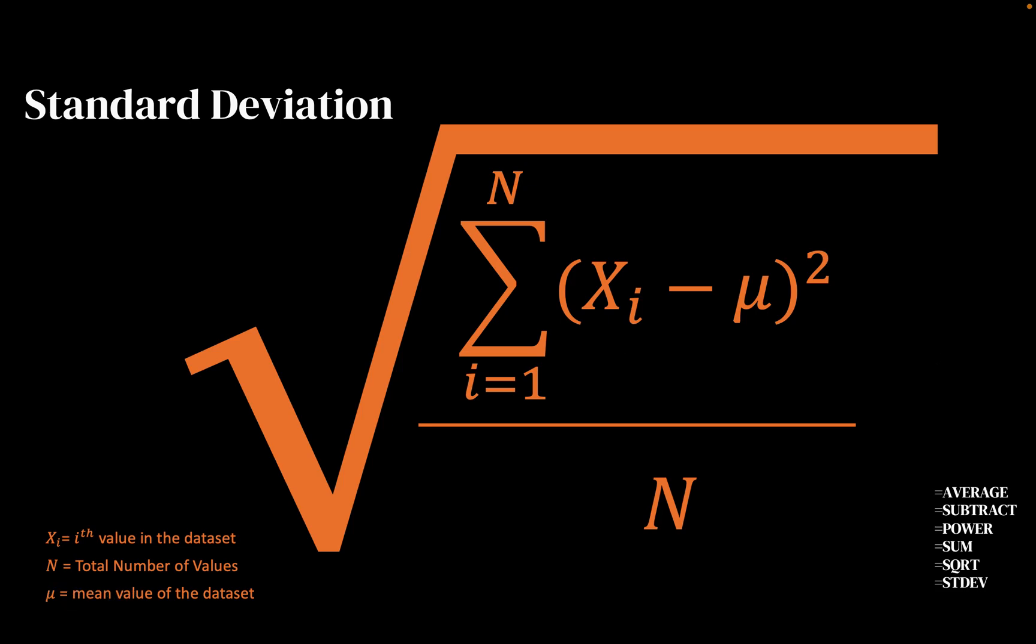So essentially, standard deviation could be defined as an average distance from the mean value. Average distance of the values in the data set from the mean value.